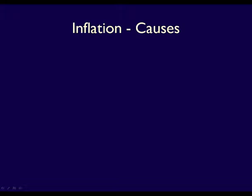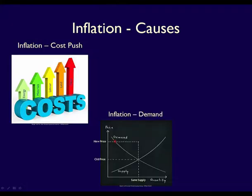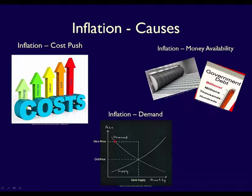Let's recap. Inflation is caused by three things. First is cost-push inflation: as costs increase for businesses, they pass the higher costs on to the customer by charging higher prices. Second is demand inflation: when demand increases but supply stays the same, prices are bid up. Third is government making more money available, which reduces the value of every dollar and again bids up the prices for the existing supply of goods and services.